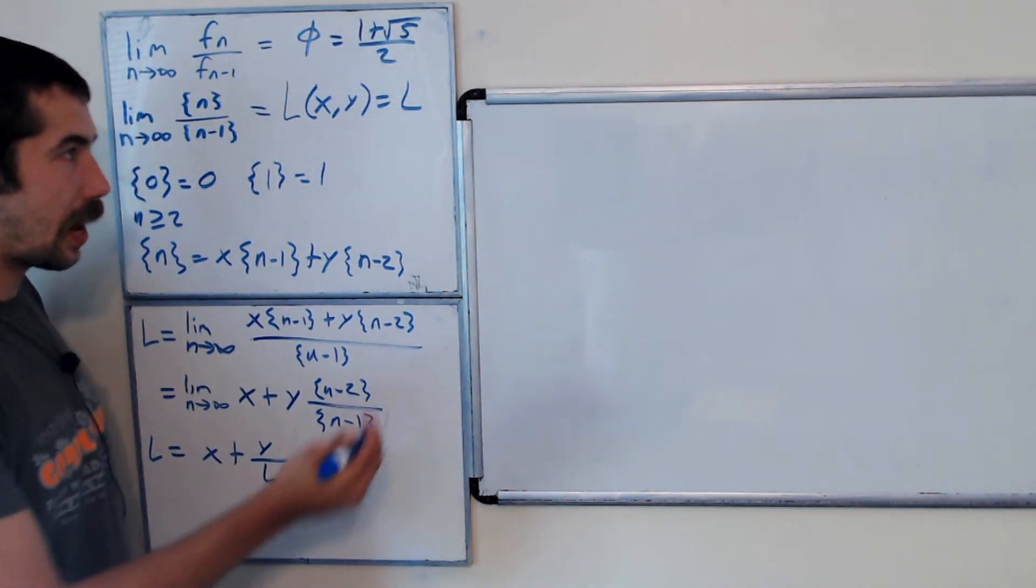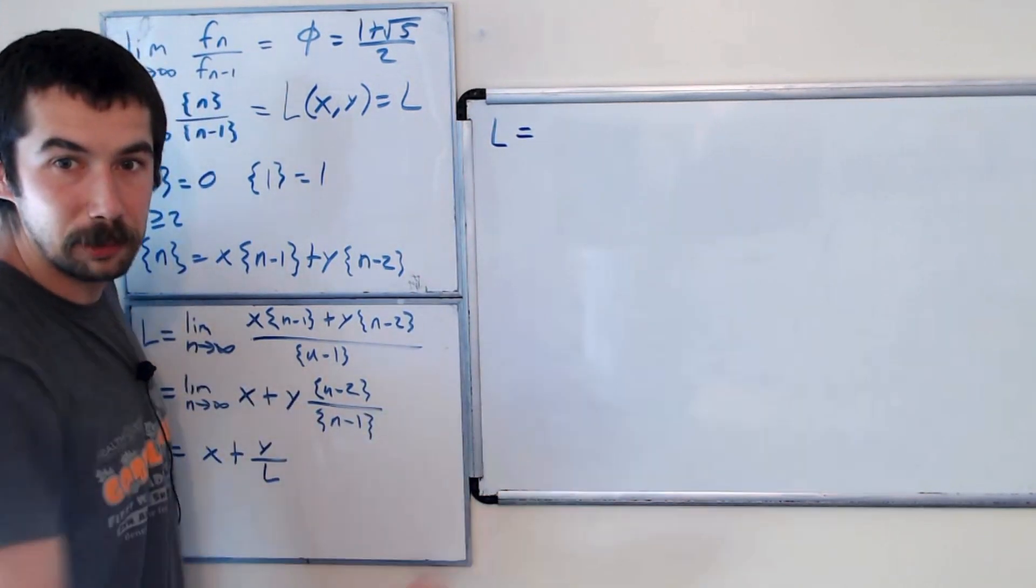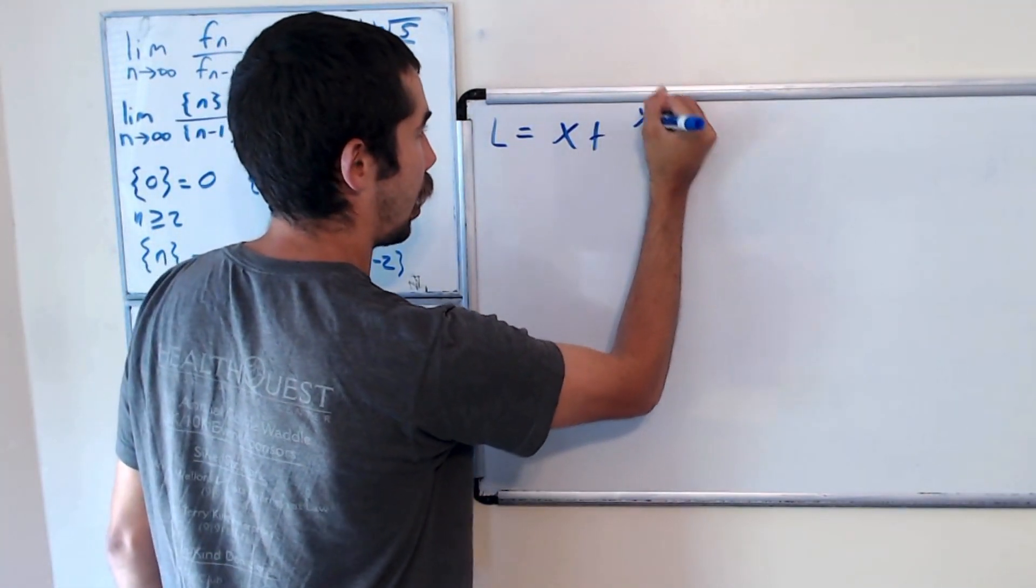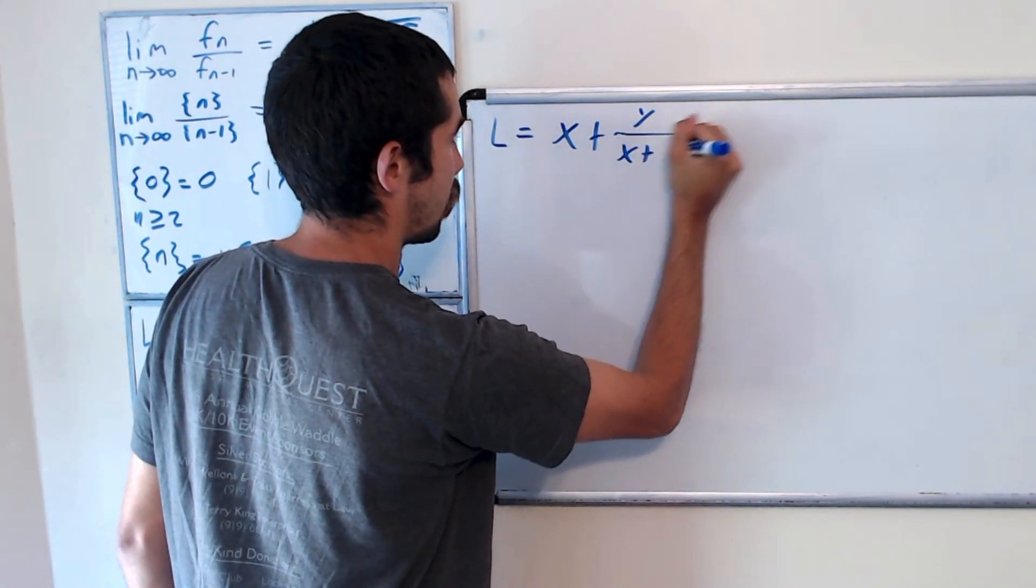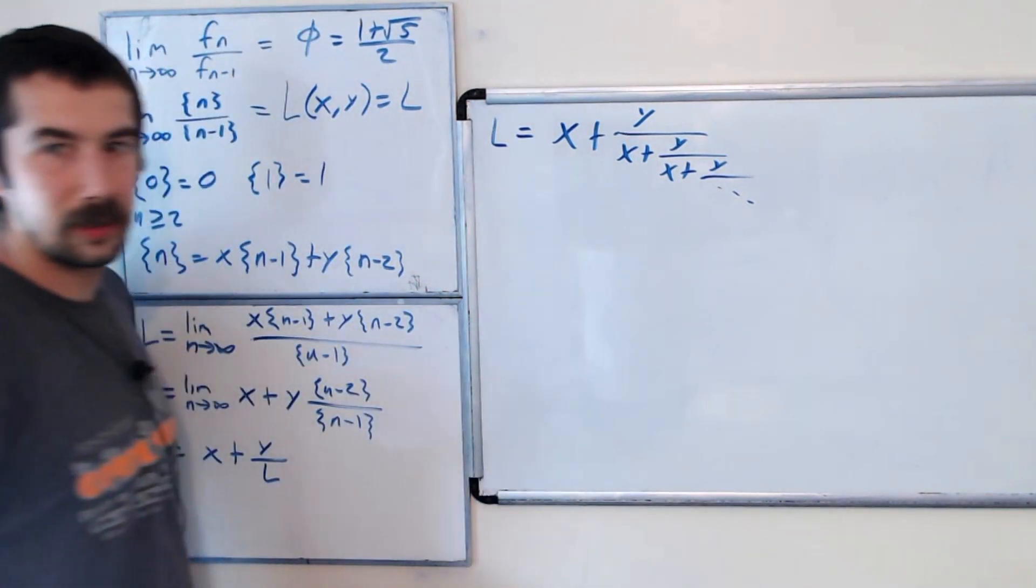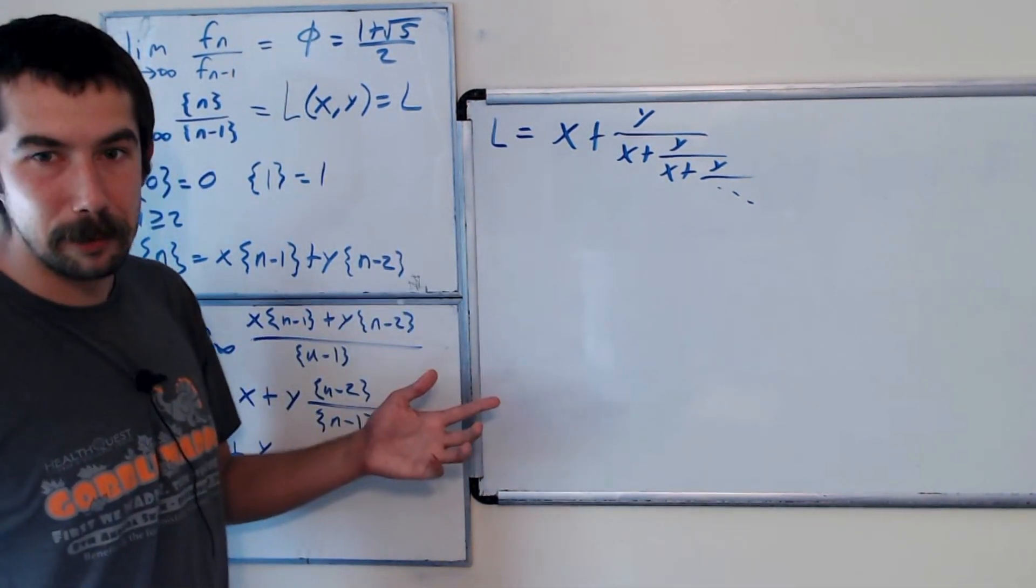And so we could write L as a continuous fraction. So it's x plus y over x plus y over x plus y over and so forth. And again, if you plug in x equals 1 and y equals 1, we get the golden ratio, which would just be 1 plus 1 over 1 plus 1 over 1.